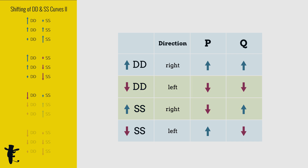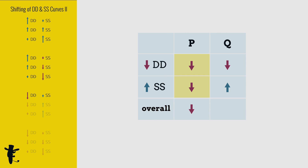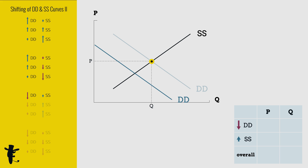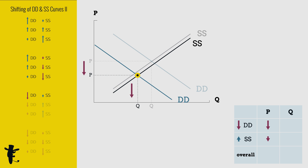What happens when demand decreases and supply increases? Overall, price decreases. Quantity decreases here and increases here — we don't really know what's the overall change. When the decrease in demand is huge and the increase in supply is small, price decreases and quantity decreases.